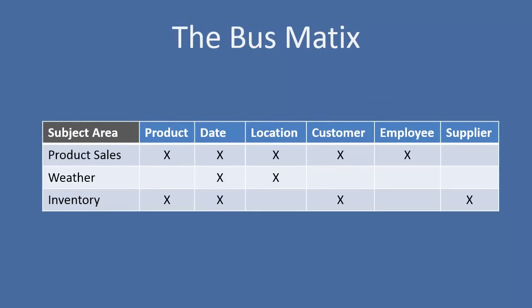Let's talk quickly about the bus matrix. This is a very simple diagram. On the columns we have our dimensions — product, date, location, customer, employee, and supplier. On the rows we have our different subject areas or business processes, such as sales, weather, and inventory. The cross section of these rows and columns creates a matrix that is very powerful when communicating. We can see that the product dimension is reused across two different subject areas: sales and inventory. We can also see that weather is at the date and location grain. Having a simple table like this helps immensely in planning meetings — you can very clearly see what exists today or what you're trying to extend.